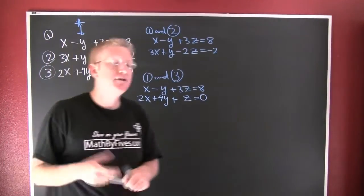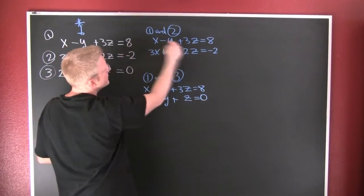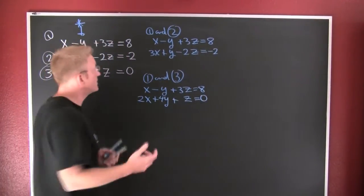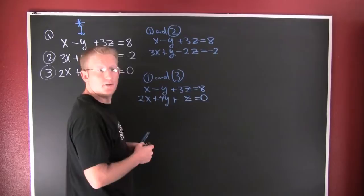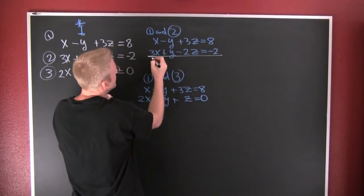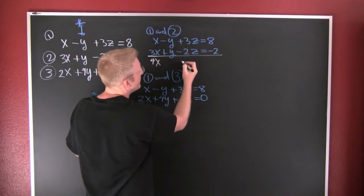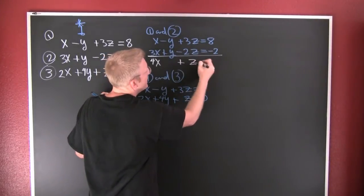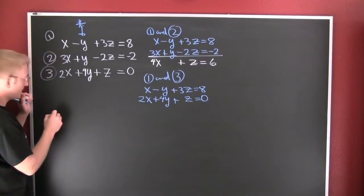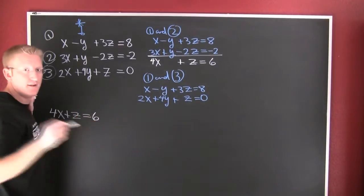Now I was eliminating which variable? Y. What am I gonna have to do here to eliminate Y? Do I have to multiply by anything? No, I already have additive inverses so I can just add them straight down. 4X minus Y plus Y is no Y, the desired effect, plus Z is 6. This is gonna be 4X plus Z equals 6. This is equation four.